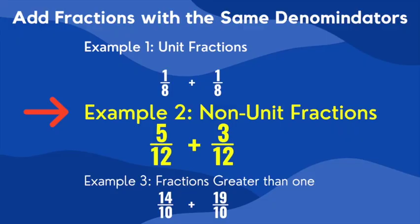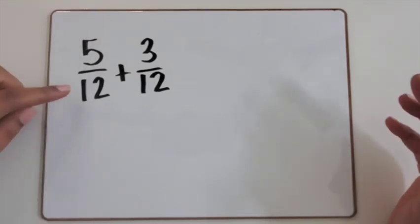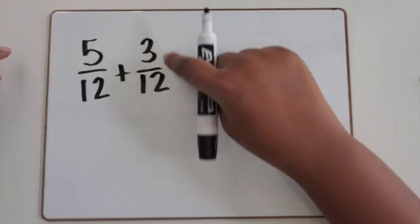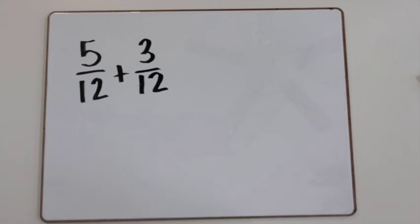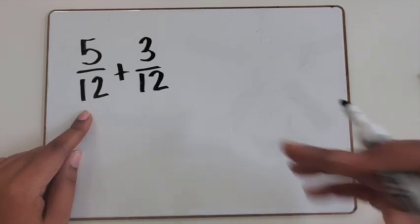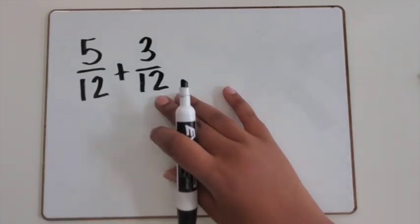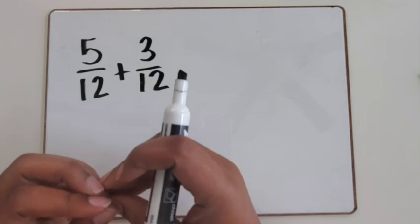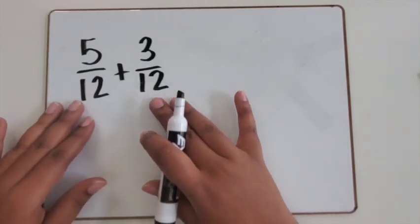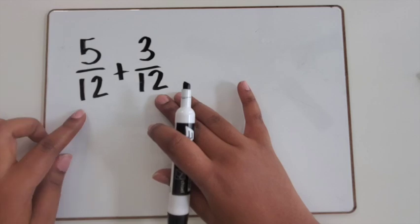Let's look at another example where our fractions are not unit fractions. Here in this example, we have five twelfths, and we're going to add on three twelfths. First, let's think about what are the denominators. The first fraction, the denominator is twelfths, and the second fraction, the denominator is also twelfths. So now we can join them together because the denominators are the same — they have the same size pieces.